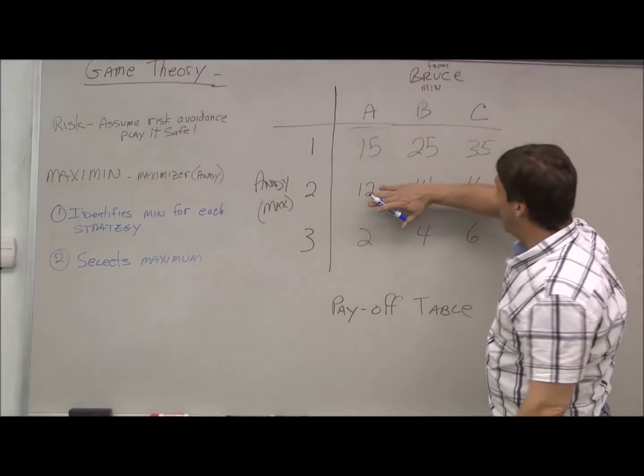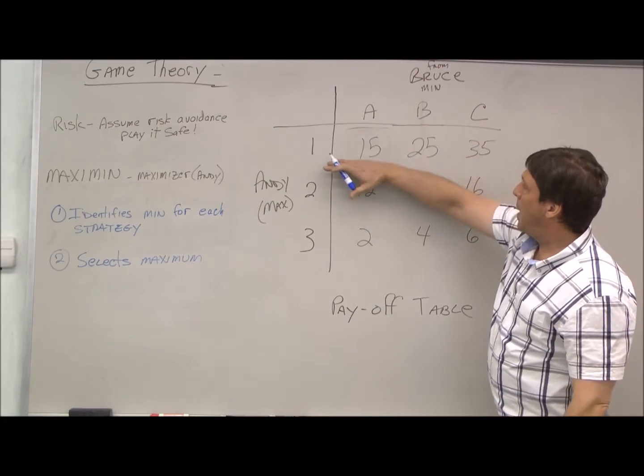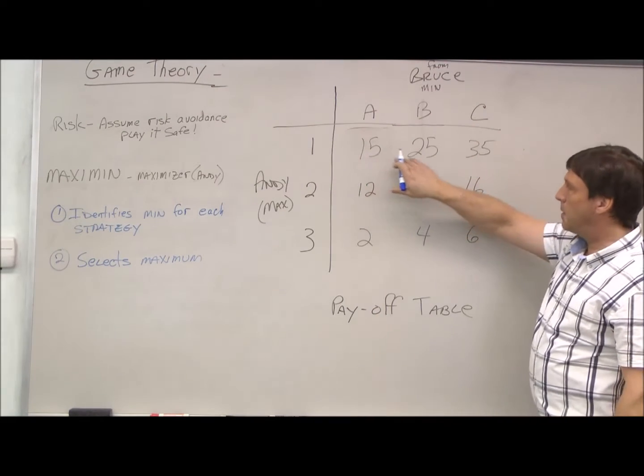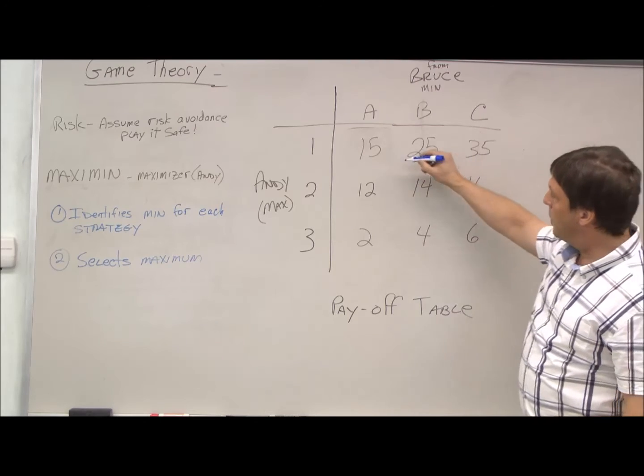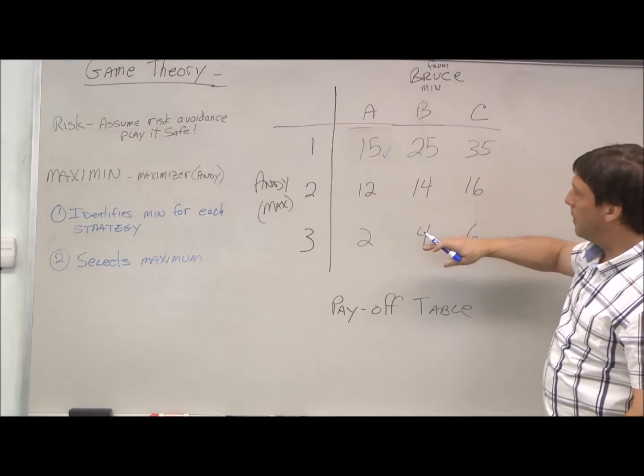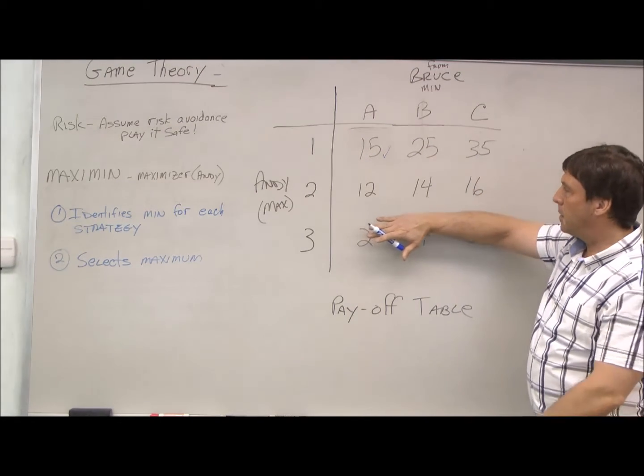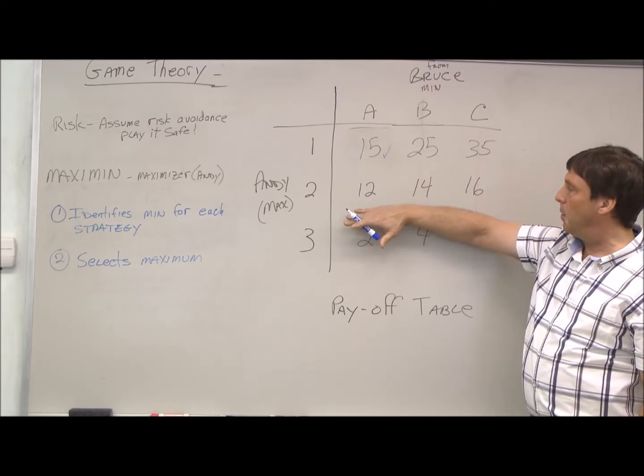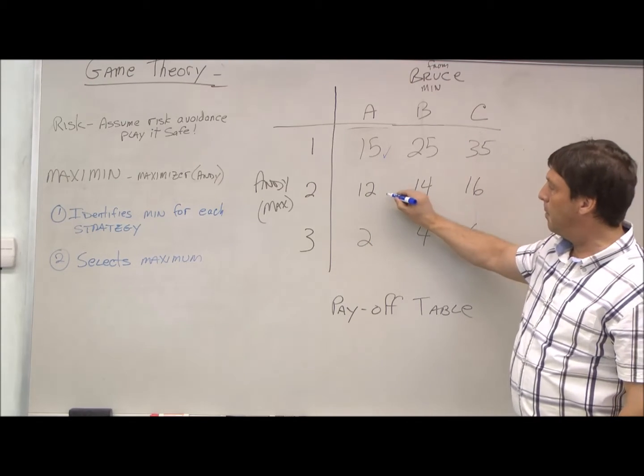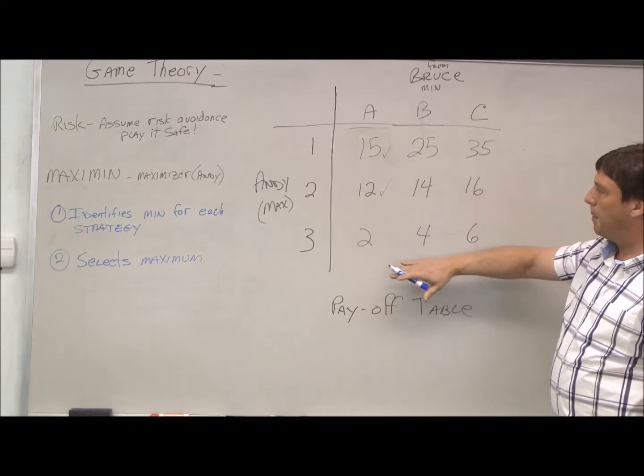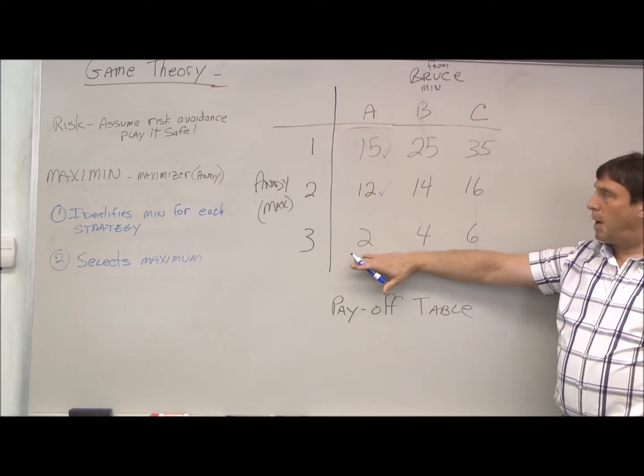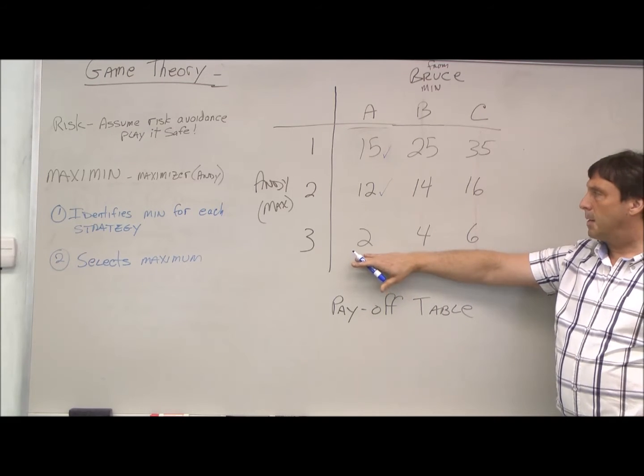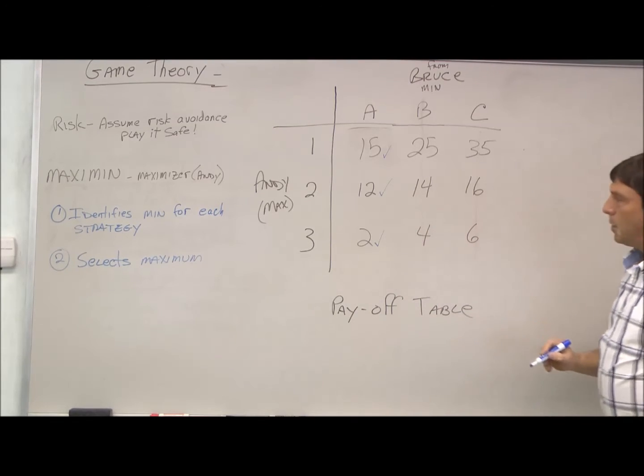So his first strategy is strategy one. He's going to identify the minimum of this strategy, which is 15. Then he's going to look at strategy two and identify the minimum, which is 12. Then strategy three, the minimum is 2.